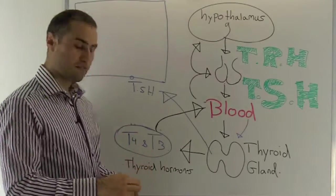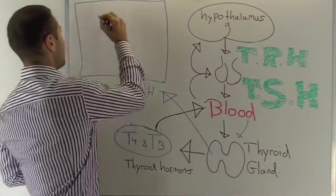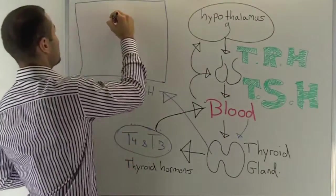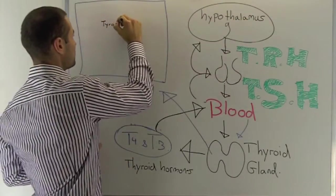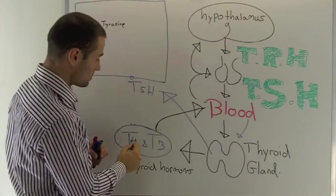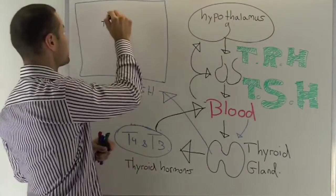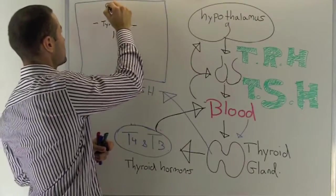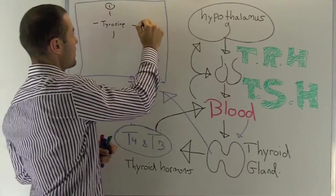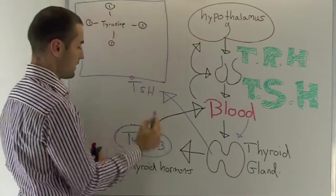Now what T4 and T3 are made out of is the T stands for tyrosine. And tyrosine, you see the number four there, means there's four iodines around it. So I'll just put a circle here with an I, iodine, iodine, iodine.